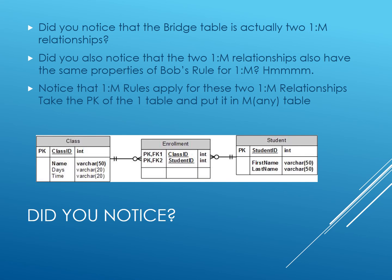Do Bob's Rules still apply? Let's see. Class is the one table in the class-to-enrollment relationship. Bob's Rule for one-to-many says to put the primary key of the one table — class ID — in the many table, enrollment. Note that it's okay that it is part of the primary key, as long as it is in the many table. The same is true for the student-to-enrollment relationship. The primary key of the one table, student ID, is in the many table, enrollment — again, as part of the primary key.